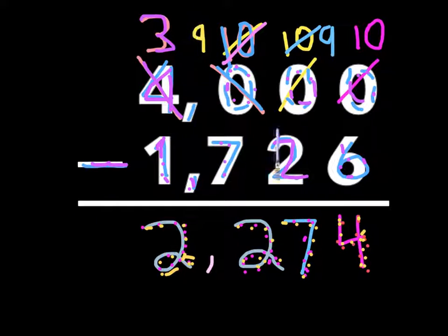So, and then when it turns into a nine, it goes to this one. This is a zero, and you can't, so this one gives one to here, and this is a ten.